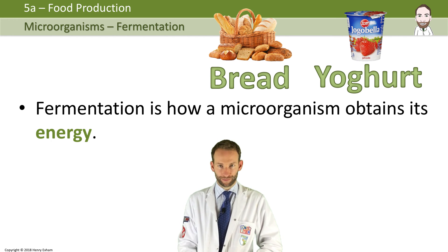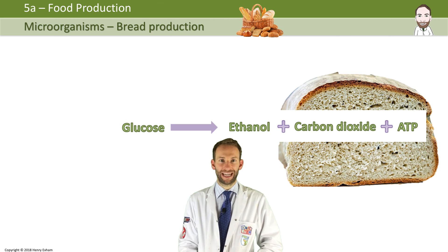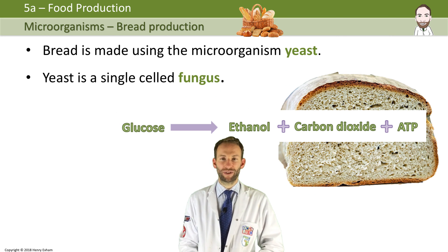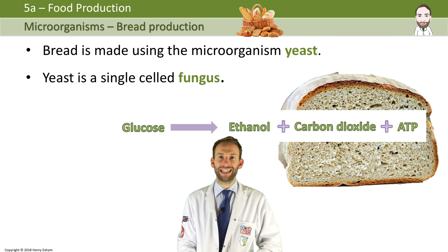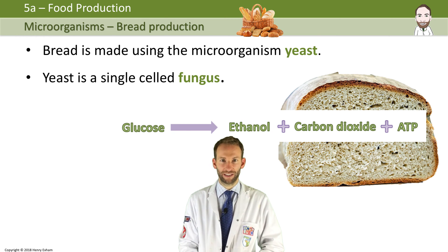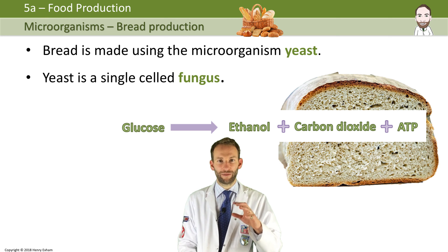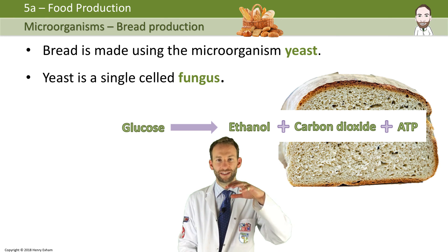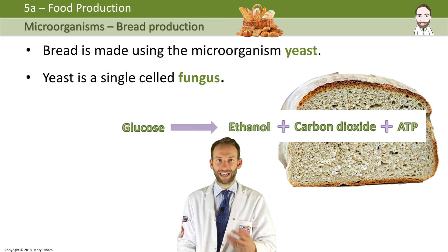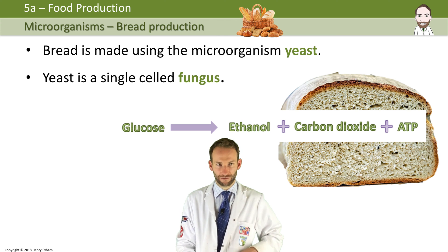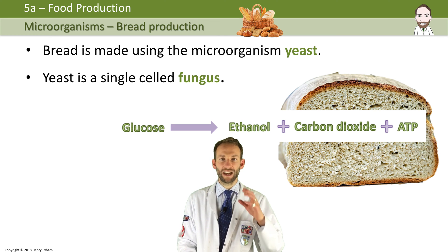When we look at bread, which is made using the microorganism yeast, the yeast carry out anaerobic respiration and release ethanol and carbon dioxide. It is the carbon dioxide that we want, because it forms little bubbles which cause the dough to rise. When you cook the bread, the ethanol evaporates and the yeast die, leaving the nice spongy texture you get from bread.